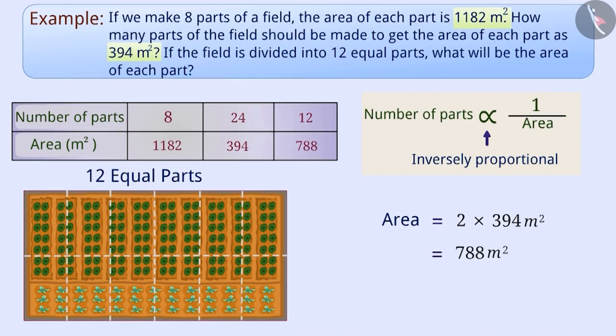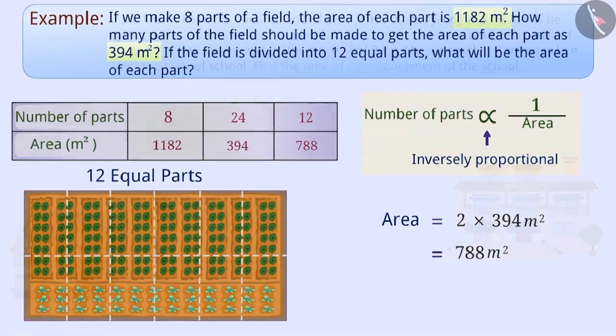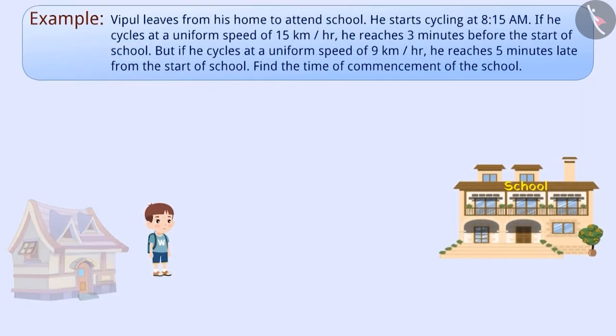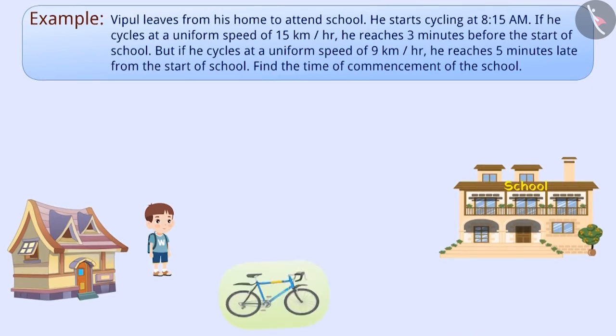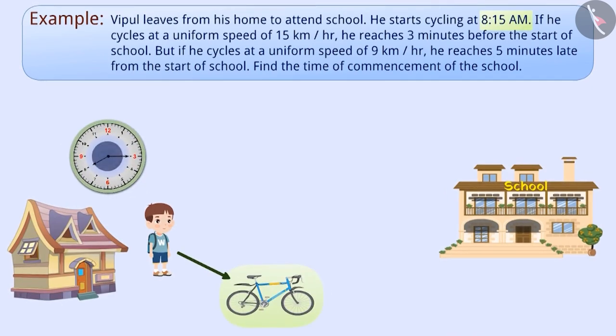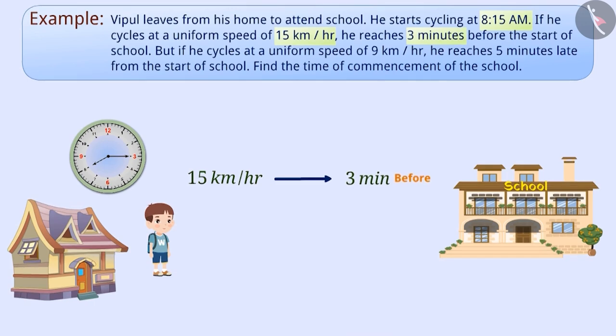Let's see the next example. Vipul leaves from his home to attend school. He starts cycling at 8:15 AM. If he cycles at a uniform speed of 15 km/hr, he reaches 3 minutes before the start of school. But if he cycles at a uniform speed of 9 km/hr, he reaches 5 minutes late from the start of school. Find the time of commencement of the school.